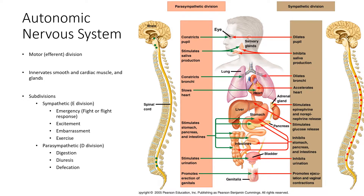If we look at the picture, we can see certain things that occur in the sympathetic division. You have dilation of pupils, inhibition of salivary production in the mouth. It also dilates the bronchi in the lungs, accelerates heart rate, and stimulates the secretion of epinephrine and norepinephrine—basically adrenaline—involved in the fight or flight response. It also stimulates glucose release, which is needed for energy. It inhibits the stomach, pancreas, and intestine, inhibits urination, and promotes ejaculation and vaginal contractions.